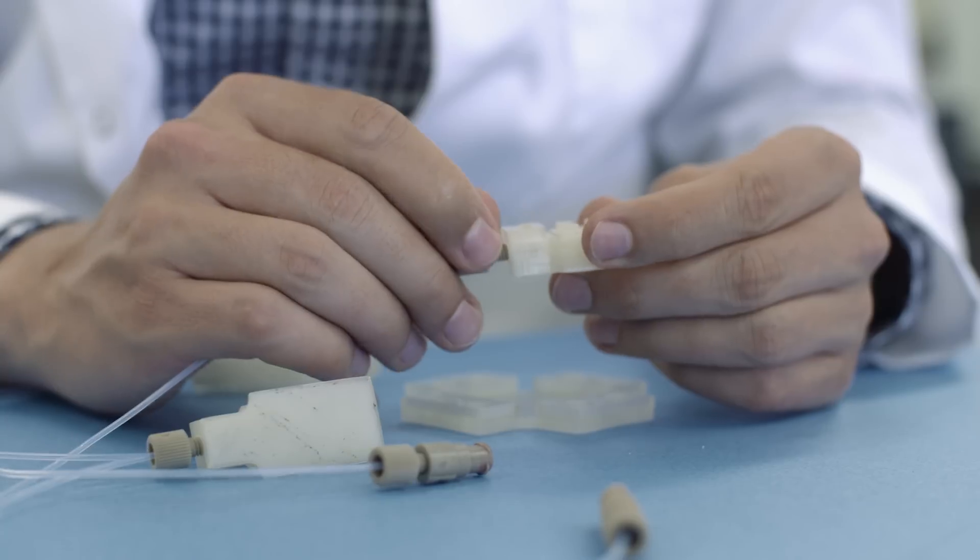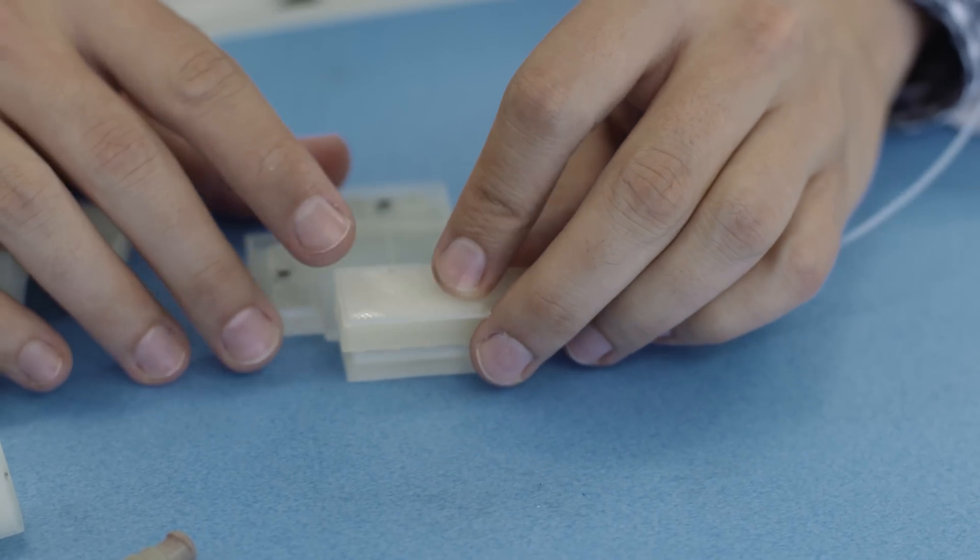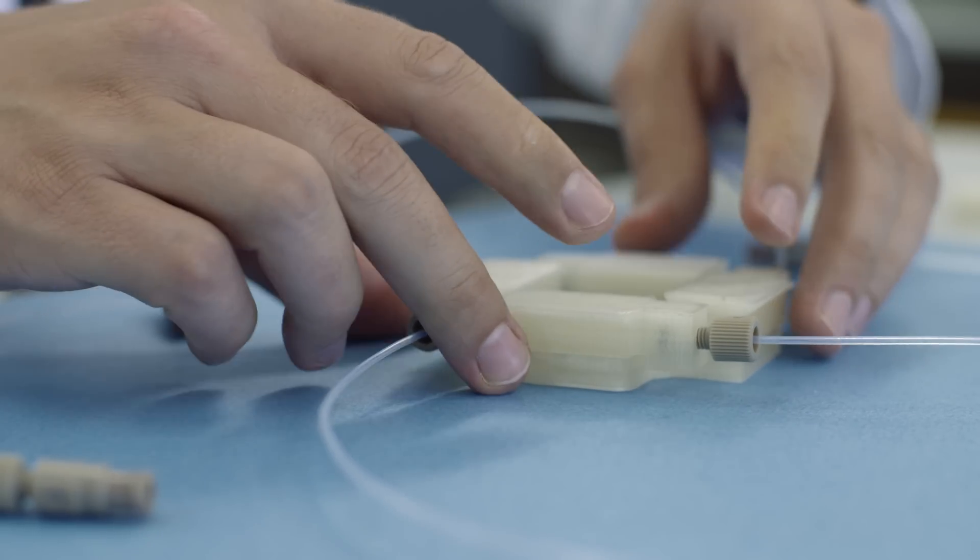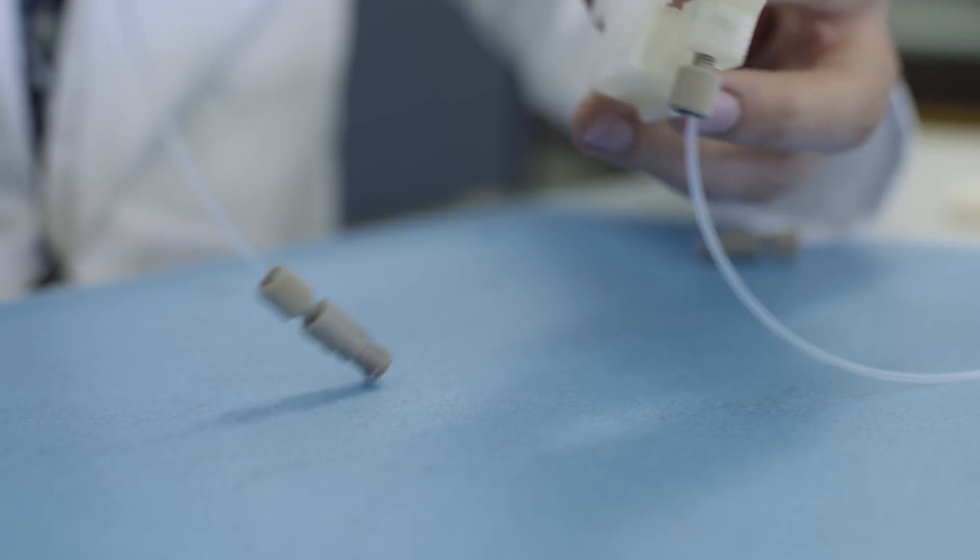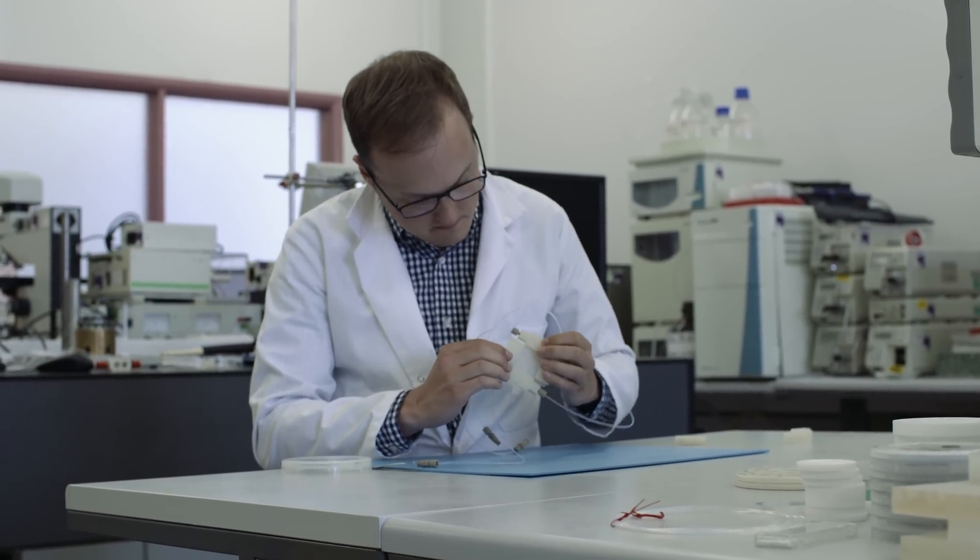We began with very simple microfluidic building blocks—just tubings, junctions, and things—and then from there we expanded that to a wider range of different types of microfluidics. We used those different designed systems to make a modular system that's based on Lego, that anyone can print out and click them together and make their own microfluidic systems.